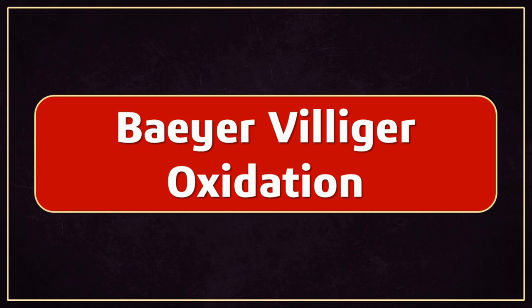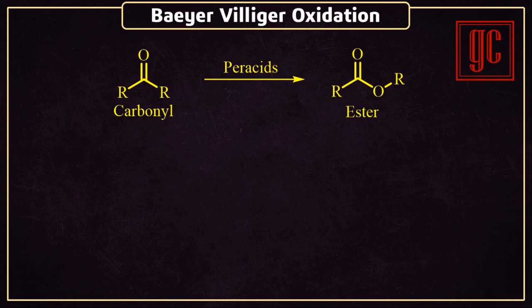In this video, we are going to discuss Bayer-Villiger oxidation reaction. This is an oxygen insertion reaction. In this reaction, carbonyl compounds are treated with peracids, and the final product esters are formed.